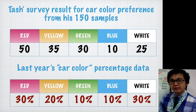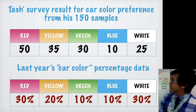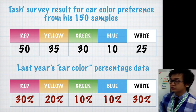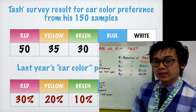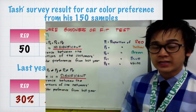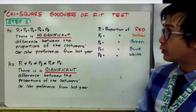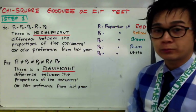Now with this dataset, we can now test the goodness of fit, or chi-square goodness of fit, to check whether this year's car color preferences is the same as last year, based on Tash's survey. So for today, we're going to be working on the chi-square procedure, and for step number one,